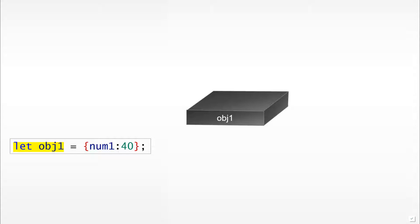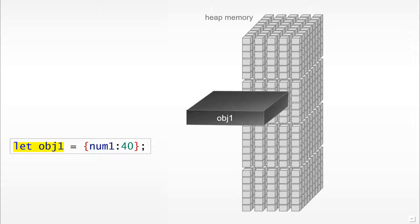Imagine that we have the following line of code: let object1 equal to an object with num1 set to 40. Imagine that we have an object which is then built in memory. We have highlighted a few things in yellow, indicating that somewhere in memory we have allocated a space for the object itself and its values. We then add a reference to an address location and simply point to it — a variable in memory which points to a given address where the object resides with all of its internals.